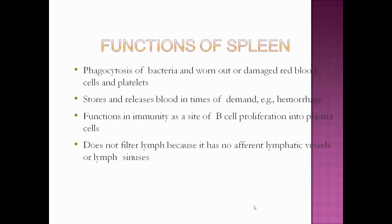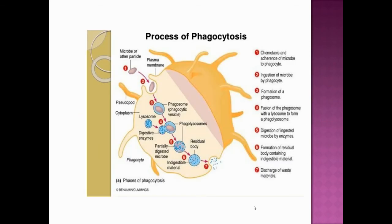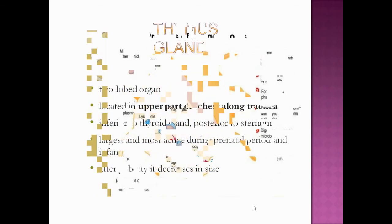Functions of the spleen include phagocytosis of bacteria and worn-out or damaged red blood cells and platelets. It stores and releases blood in times of demand, such as during hemorrhage, and functions in immunity as a site of B cell proliferation into plasma cells. It does not filter lymph because it has no afferent lymphatic vessels.